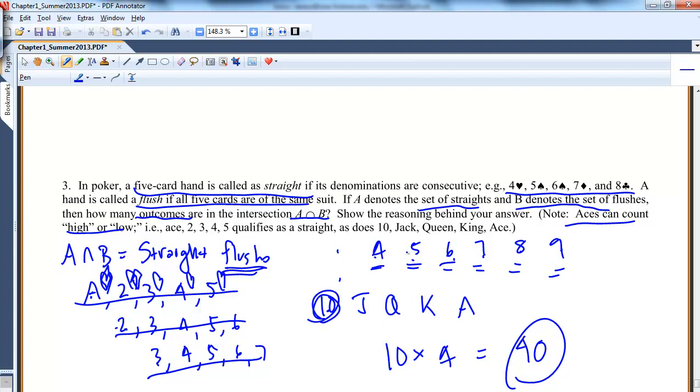I have 10 different starting points that would give me a straight. And then I have the 4 suits, and there's 40 possible. Okay, I'll talk to you later.